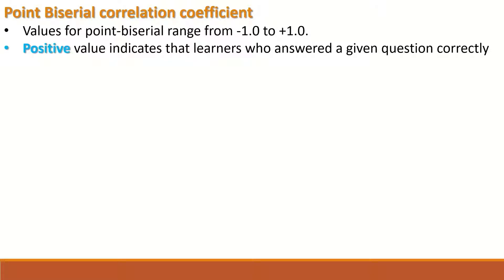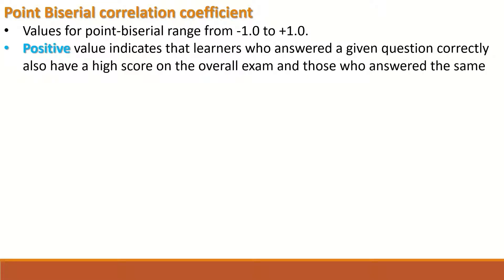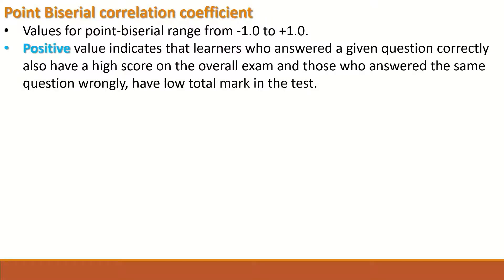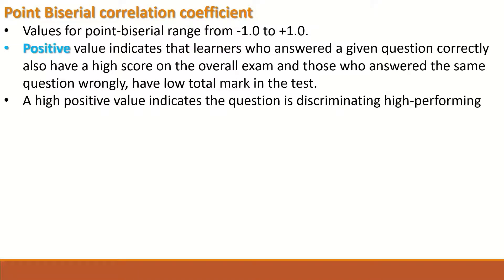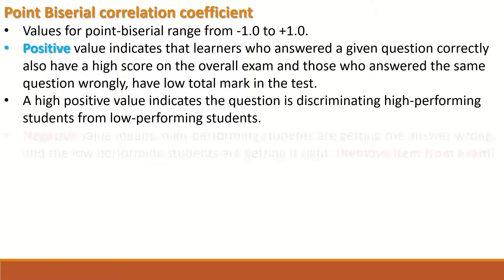A positive value of the coefficient indicates that learners who answered a given question correctly also have a high score on the overall exam, while those who answered the same question wrongly have a low total mark. A high positive value indicates that the question is effectively discriminating high-performing students from low-performing students.